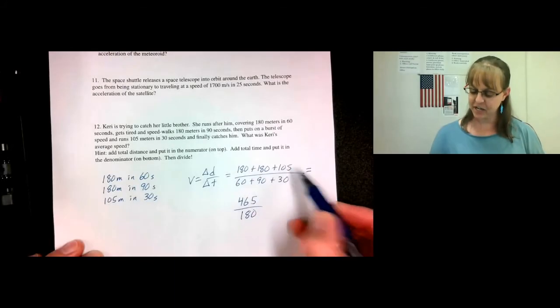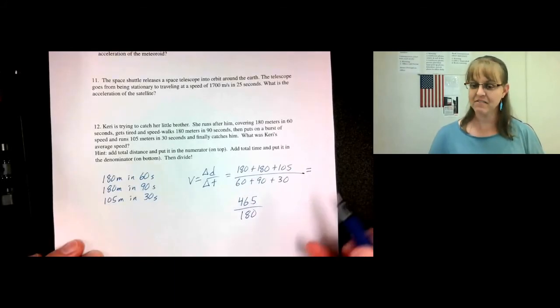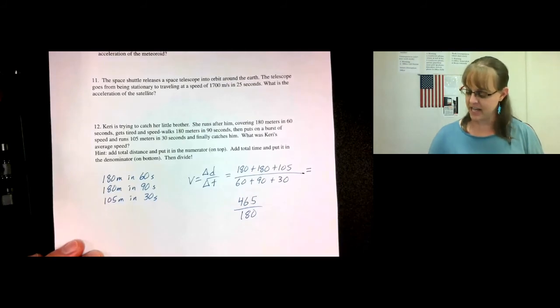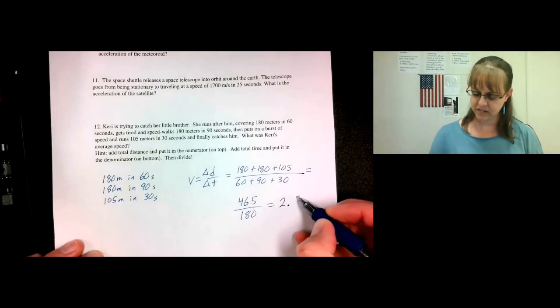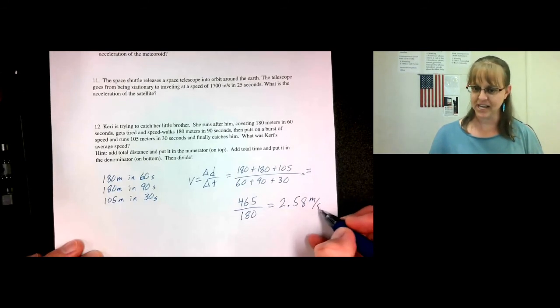When we add these numbers, we get 465. When we add these numbers, we get 180. Now we can divide. And our answer is 2.58 meters per second.